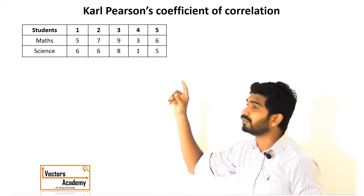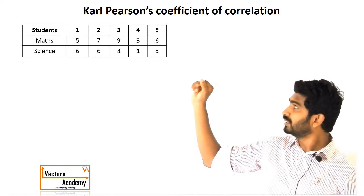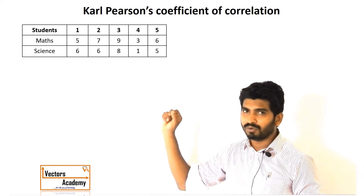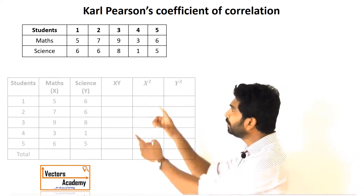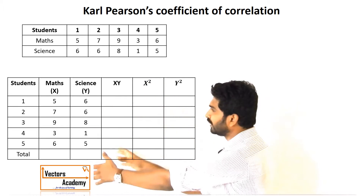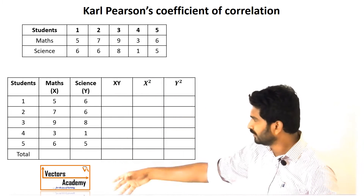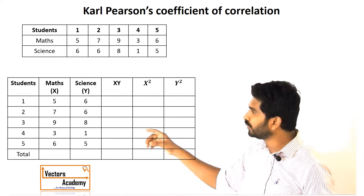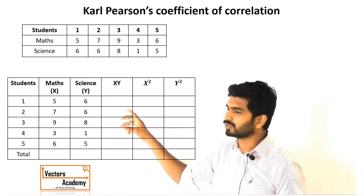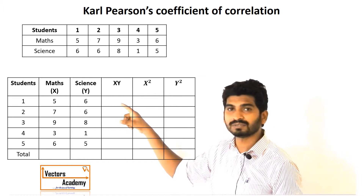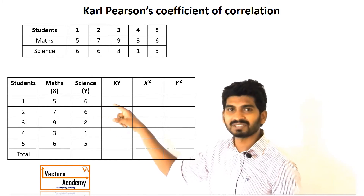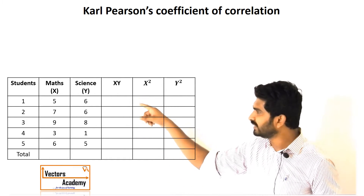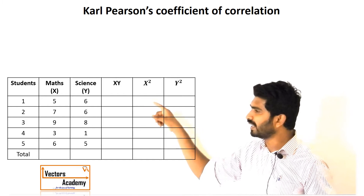To find this, we calculate Karl Pearson's coefficient of correlation, that is r. The first step is to represent the information in a vertical table. We name two variables: maths as x and science as y. The next three columns will represent x times y, x squared, and y squared.